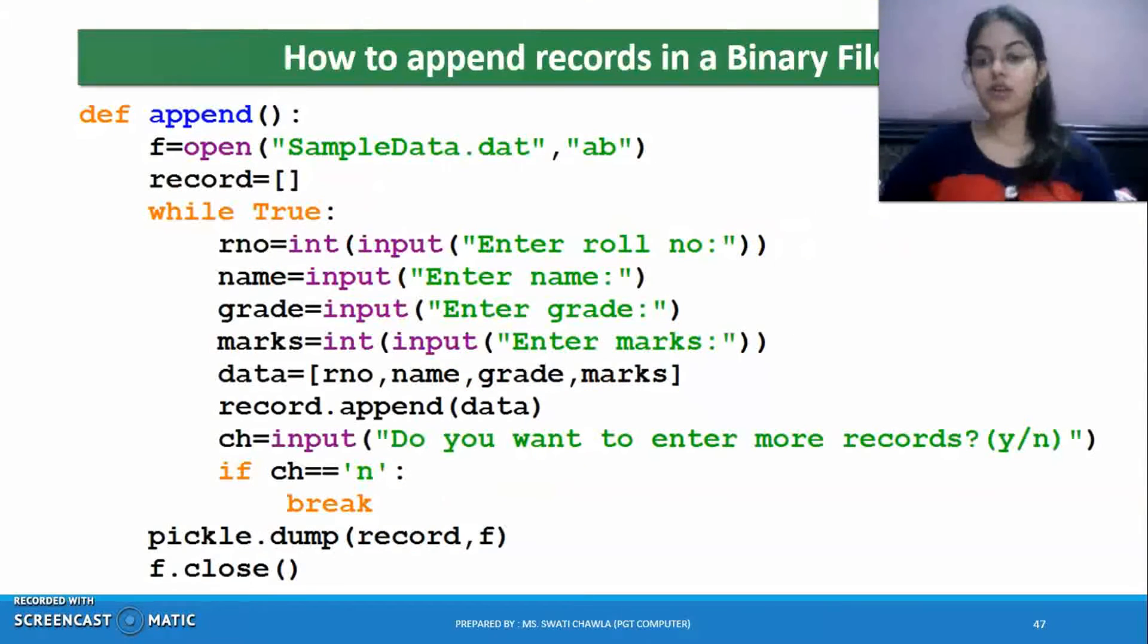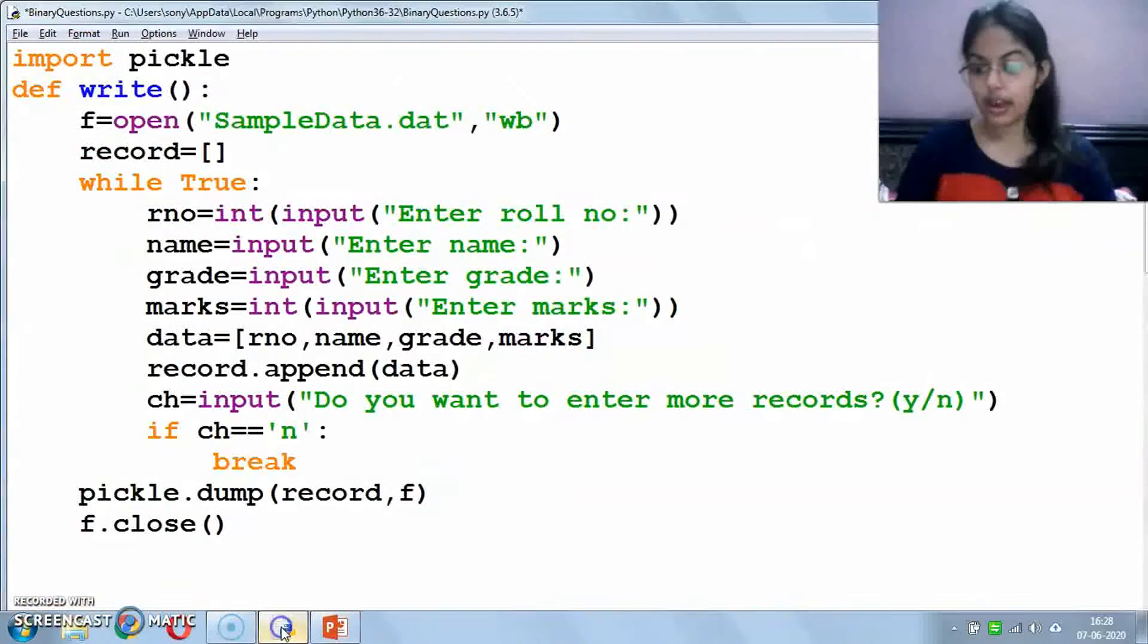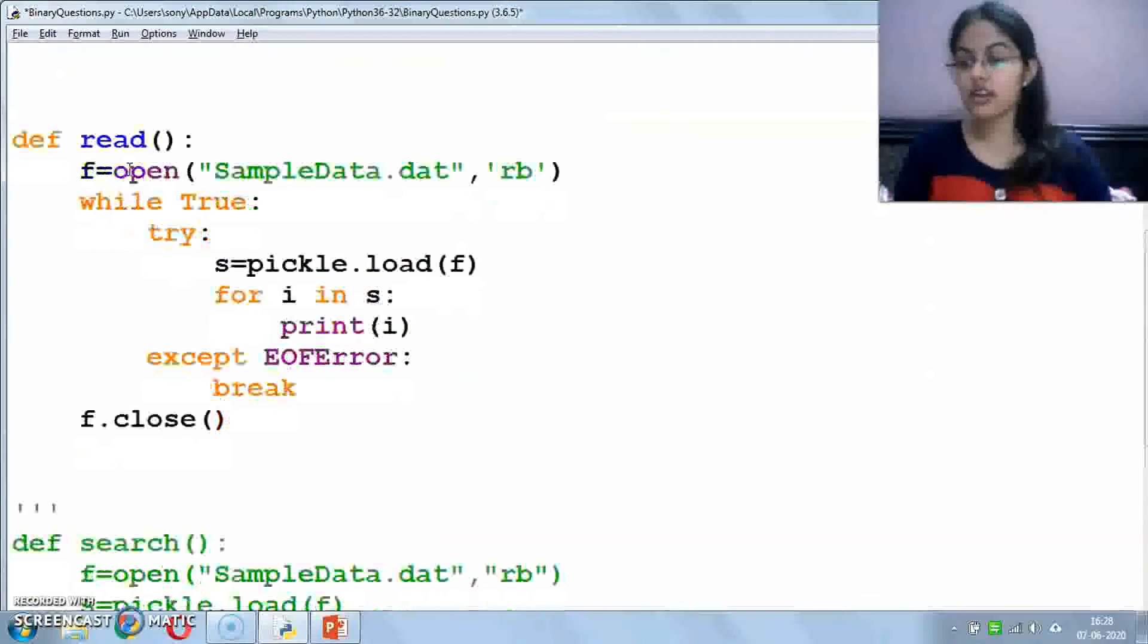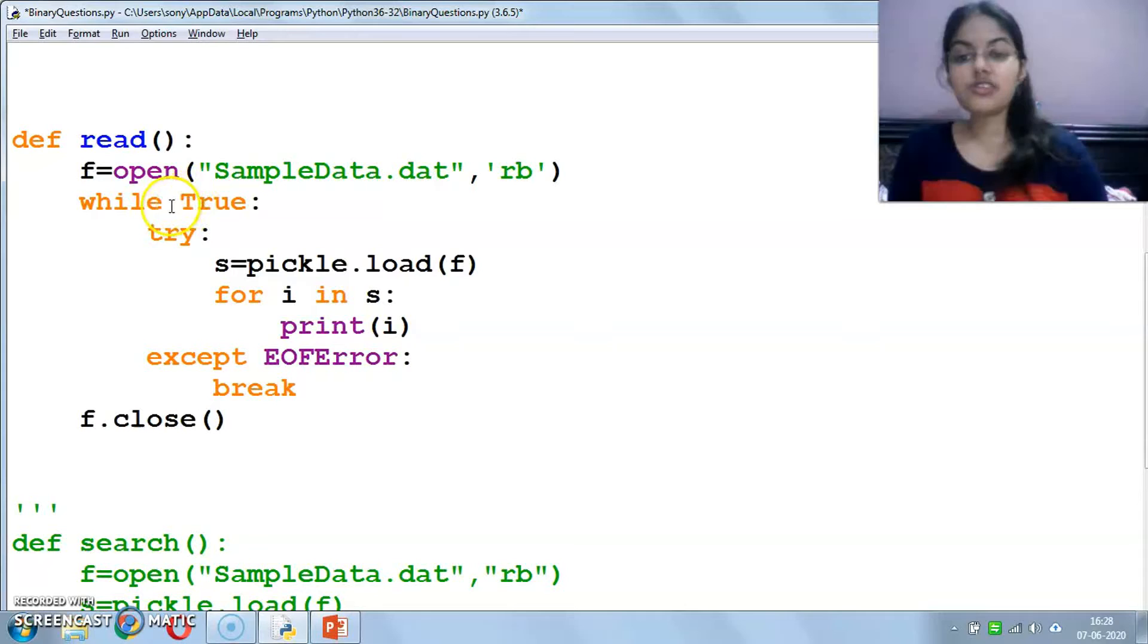So until the end of file is not coming, it will load my records, read and print. As soon as end of file comes, it will break, meaning exit the loop. Then what will the file do? Close.